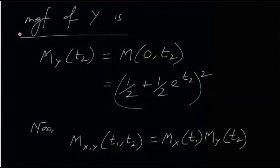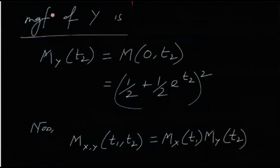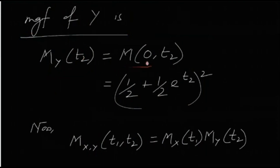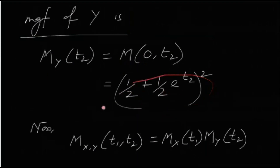Similarly, the MGF of Y is found by putting 0 in place of t1 and keeping t2 as usual. So M_Y(t2) = M(0, t2), which is nothing but (1/2 + 1/2 · e^(t2))².